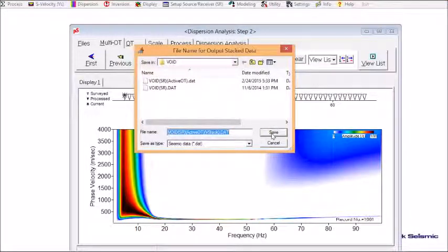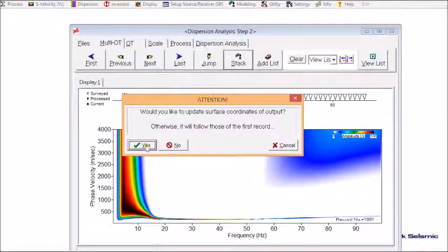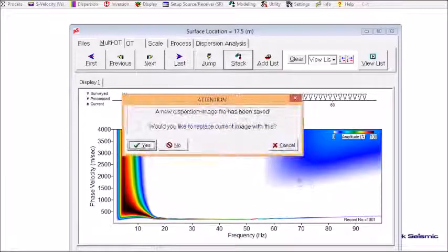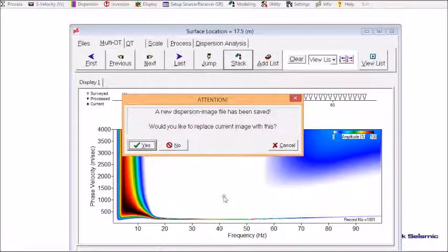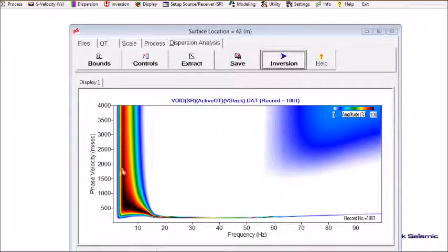Specify output file name for that stacked dispersion image file. And click Yes. And now it asks me if I want to replace current dispersion image dataset with the new stacked image data. I click Yes. Now there is only one dispersion image. So, I'm going to extract one dispersion curve from this stacked image.